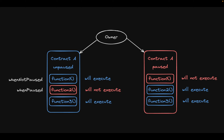You have a state variable called paused which contains the state of the smart contract — a boolean variable containing true or false. False represents unpaused and true represents paused. Because of using access control, the owner or admin of the contract can change the state from paused to unpaused and vice versa. By default a contract will be in an unpaused state. If you add the modifier whenNotPaused to a function, it will only execute in the unpaused state.